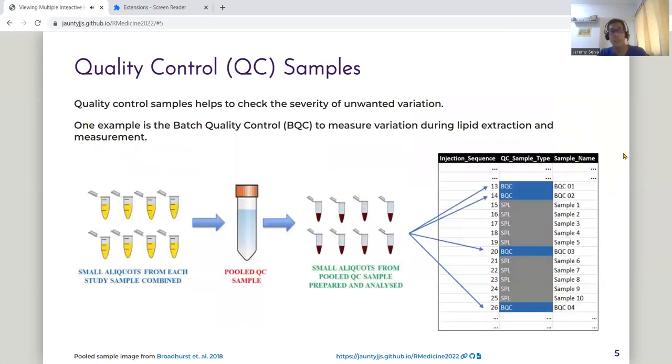To check for the severity of these unwanted variations, we have to use quality control samples. One example is the batch quality control, or BQC.